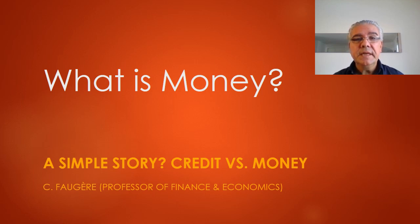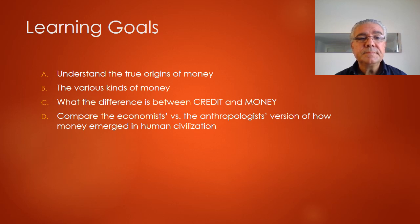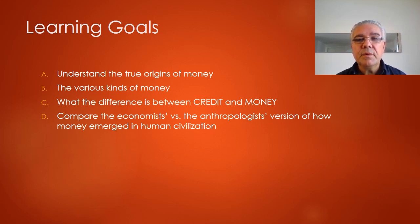The topic is credit versus money. The learning goals are: to understand what the true origins of money are, what the various kinds of money have been, what is the difference between credit and money, and to compare the economist's story versus the anthropologist's story on how money emerged in human civilization.